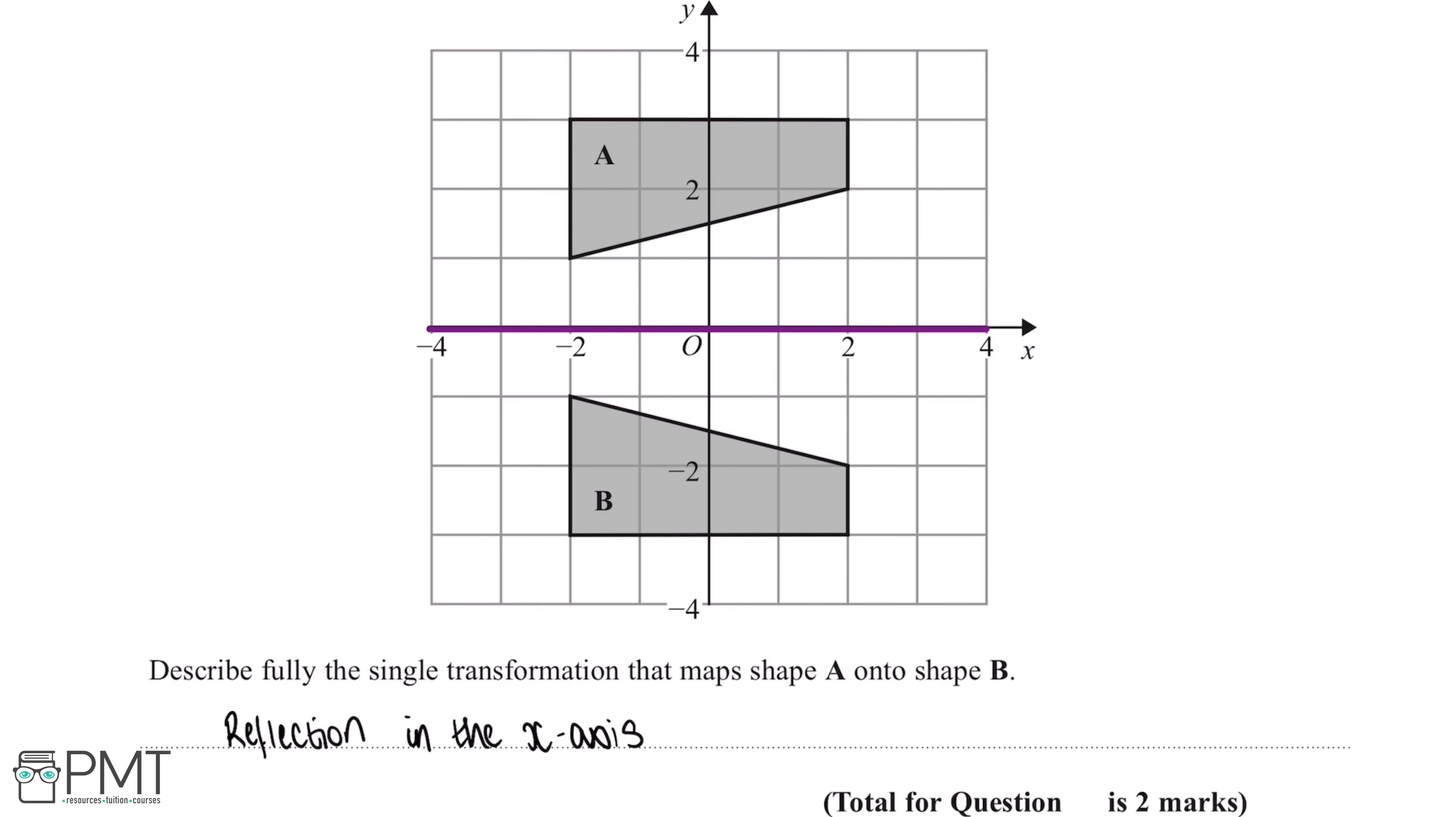And this question's worth two marks. We'll get our first mark for saying that the transformation was a reflection, and the second mark for saying that it was in the y-axis.